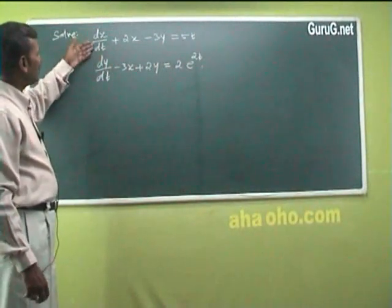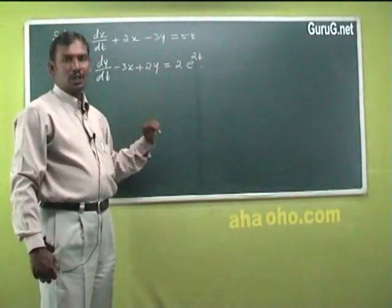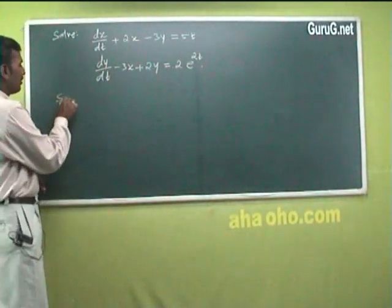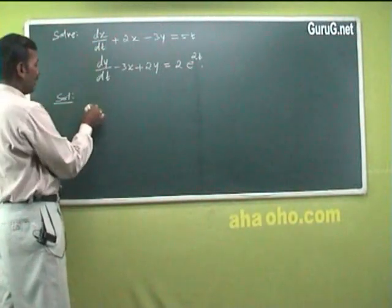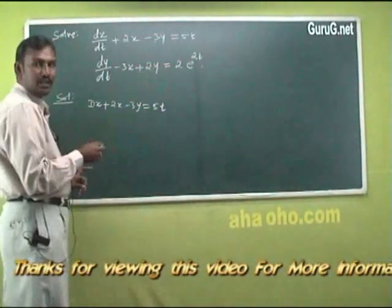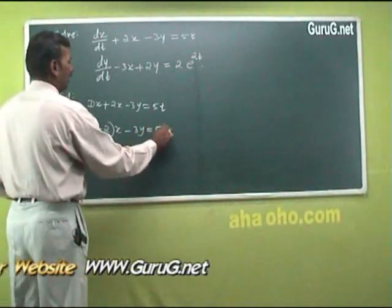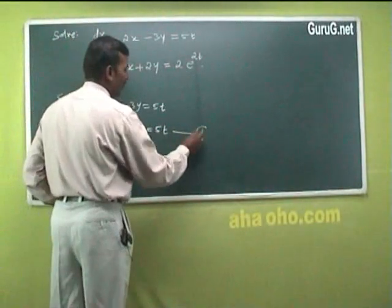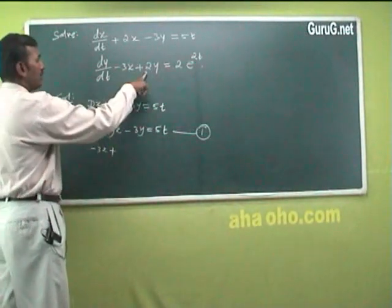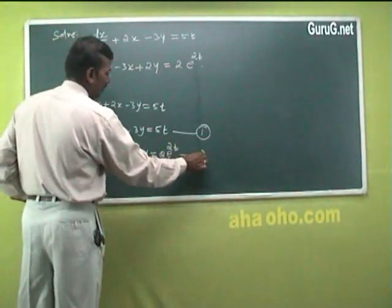Now solve: dx/dt plus 2x minus 3y equal to 5t and dy/dt minus 3x plus 2y equal to e^(2t). It is a simultaneous first-order linear differential equation. Rewriting using d operator notation: (d plus 2)x minus 3y equal to 5t as equation 1, and minus 3x plus (d plus 2)y equal to e^(2t) as equation 2.